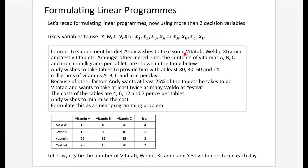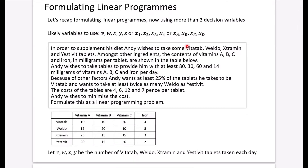In order to supplement his diet, Andy wishes to take some VitaTab, Weldo, Ekstermin, and Yestervit tablets, represented by letters V, W, X, and Y. The contents of vitamins A, B, C, and iron in milligrams per tablet are shown in the table. Andy wishes to take tablets to provide at least 80, 30, 60, and 14 milligrams of vitamins A, B, C, and iron per day. Andy wants at least 25% of the tablets he takes to be VitaTab, and wants to take at least twice as many Weldo as Yestervit. The cost of the tablets are 4, 6, 12, and 7 pence per tablet, and Andy wishes to minimize the cost. Formulate this as a linear programming problem.